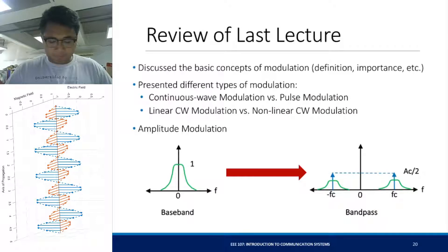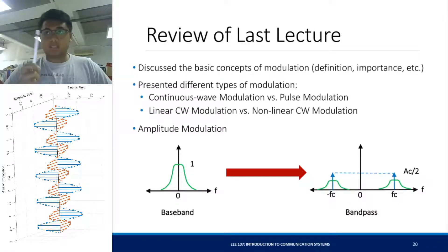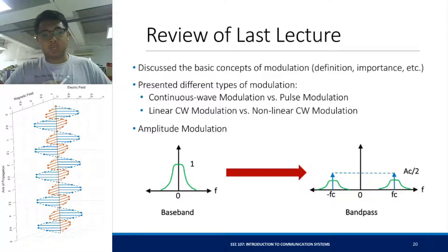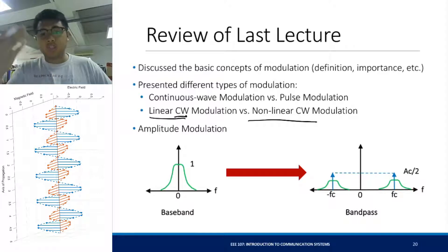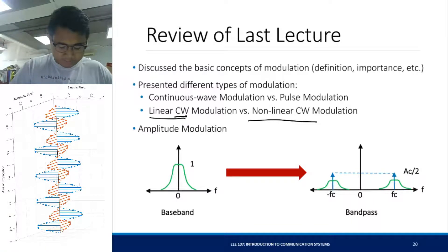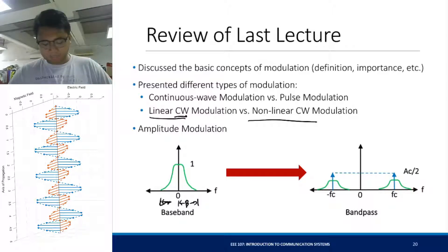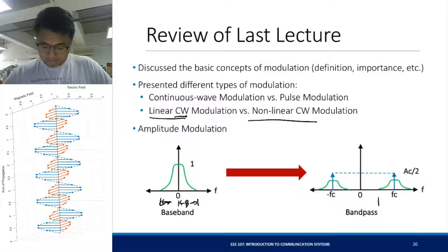Just a review of the previous lecture: we discussed the basic concepts of modulation, the importance of modulation, and its definition. We presented different types of modulation — linear modulation versus pulse modulation. Pulse modulation will be discussed in a later lecture. For now, we'll be talking about linear modulation schemes, specifically linear continuous wave modulation. We also compared it with non-linear continuous wave modulation. I also introduced amplitude modulation, where your baseband signal with bandwidth B is translated into a higher frequency using an AM wave modulator. However, it now occupies twice the bandwidth of your original signal.